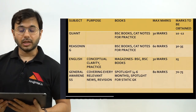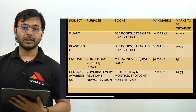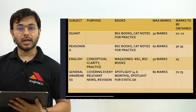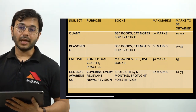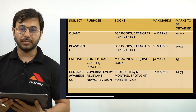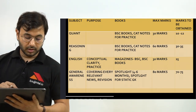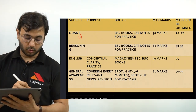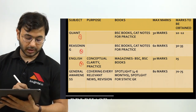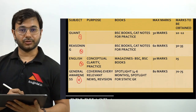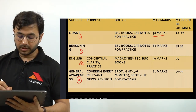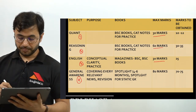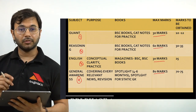Let us start with the sources and books you need for RBI Grade B Phase 1. After this, I will cover RBI Grade B Phase 2, then SEBI Phase 1 and Phase 2. There are a total of four sections: Quant, Reasoning, English and General Awareness. The weightage is 30 marks for Quant, 60 marks for Reasoning, 30 marks for English, and 80 marks for General Awareness.